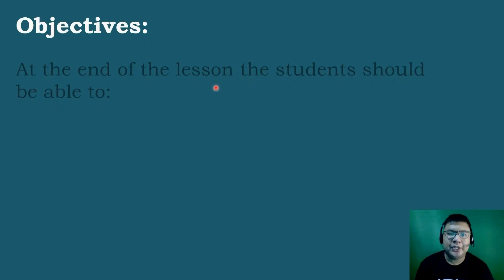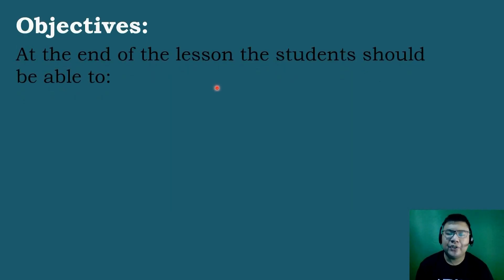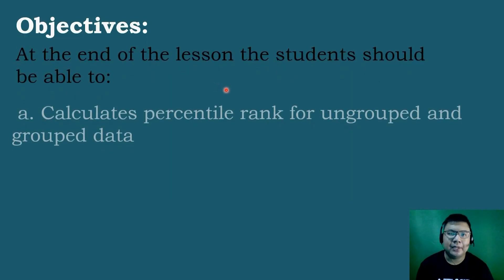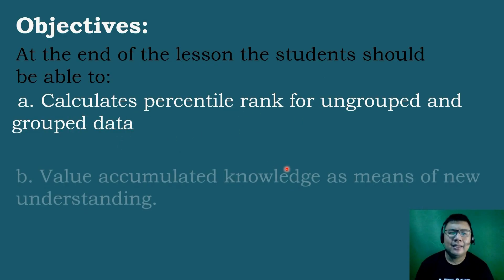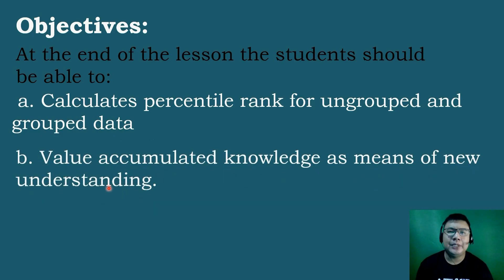These are the following objectives we need to attain for today's topic. Letter A: calculate percentile rank for ungrouped and grouped data. And Letter B: value accumulated knowledge as a means of new understanding.